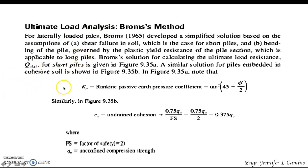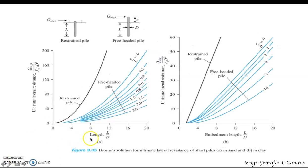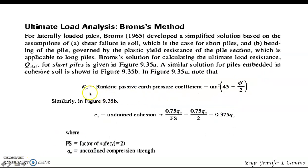Broms developed a simplified solution based on the assumption of shear failure in soil — applicable to short piles — and bending governed by the plastic yield resistance of the pile section, applicable to long piles. From figure 9.35a, the undrained cohesion c_u is approximately 0.75 times q_u, with a factor of safety of 2, simplifying to c_u = 0.375 q_u.